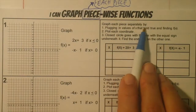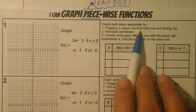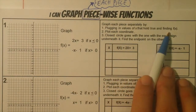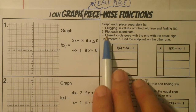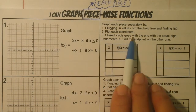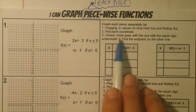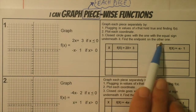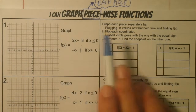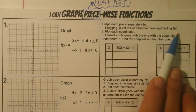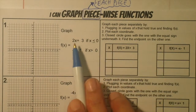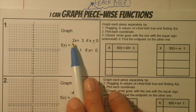You graph each piece separately by: one, plugging in the values that hold true for finding f of x; then you plot each coordinate; then the closed circle goes with the piece that has the equal sign; and then you find the endpoint of the other one. So we're going to do the first one — plug in the first values.